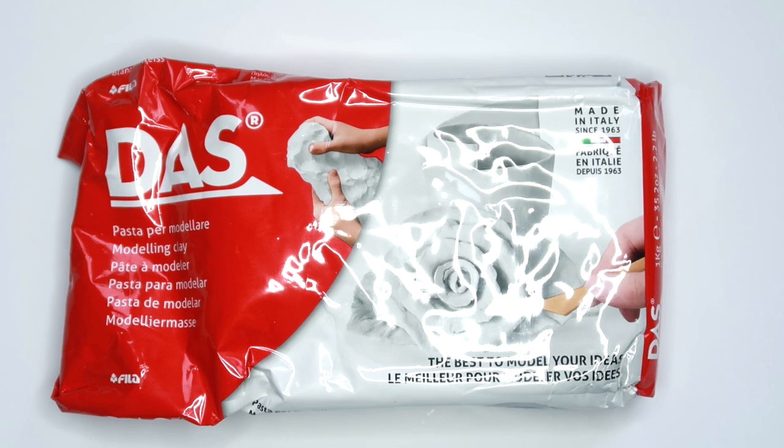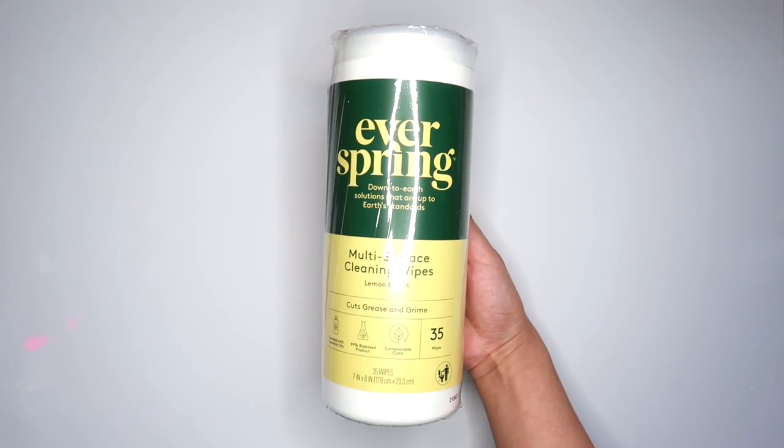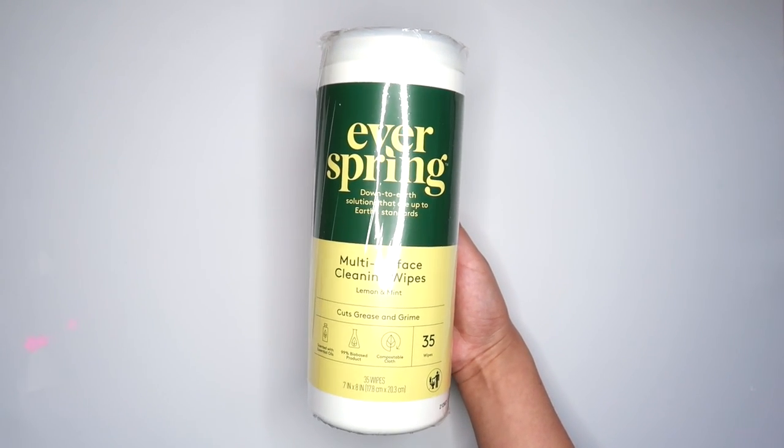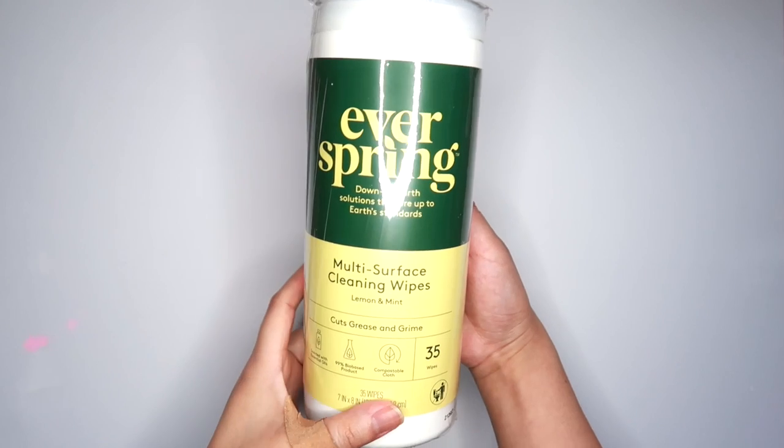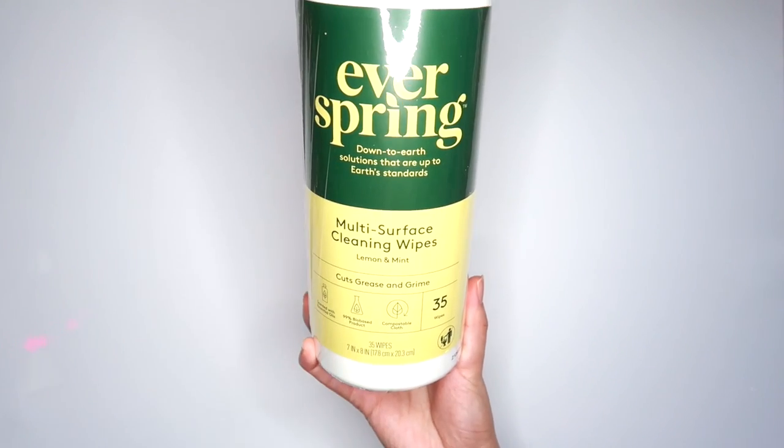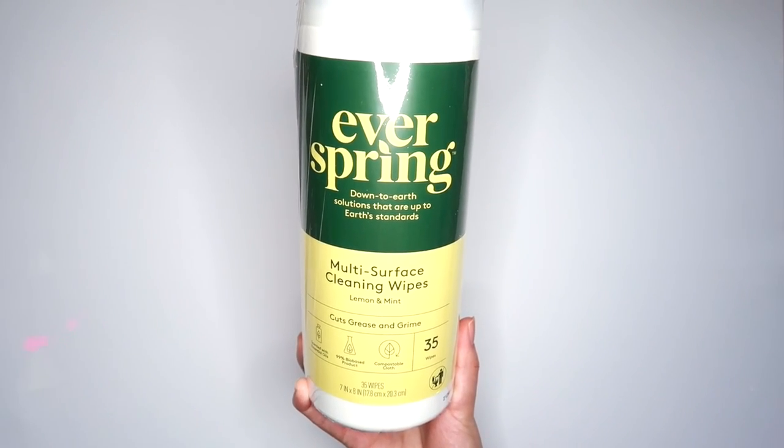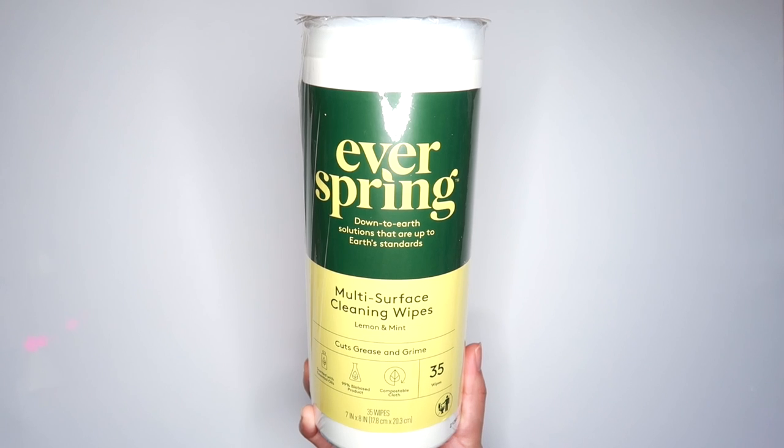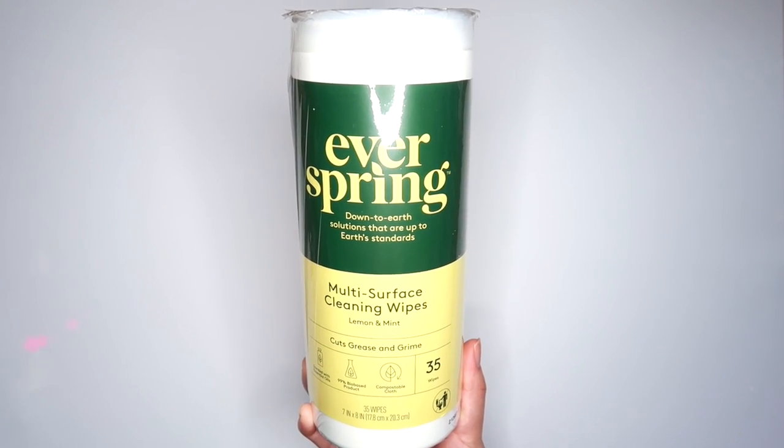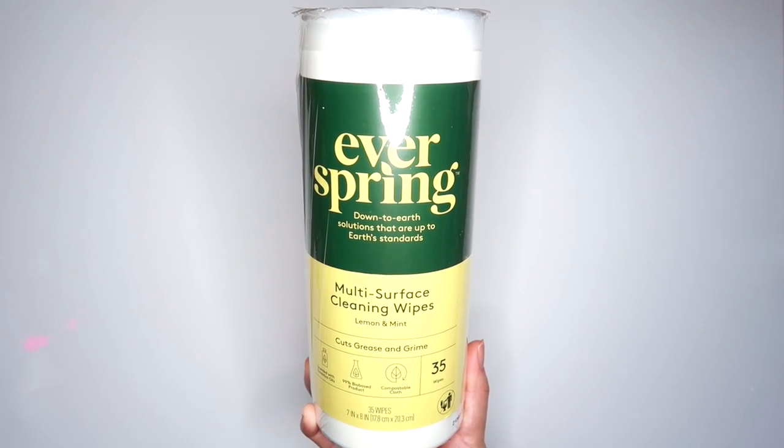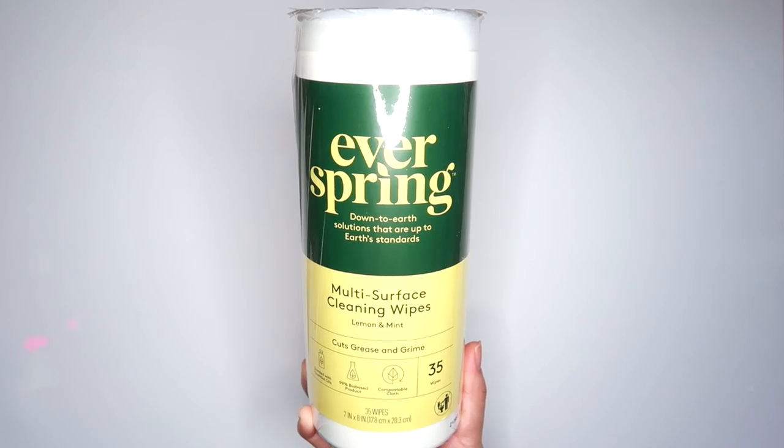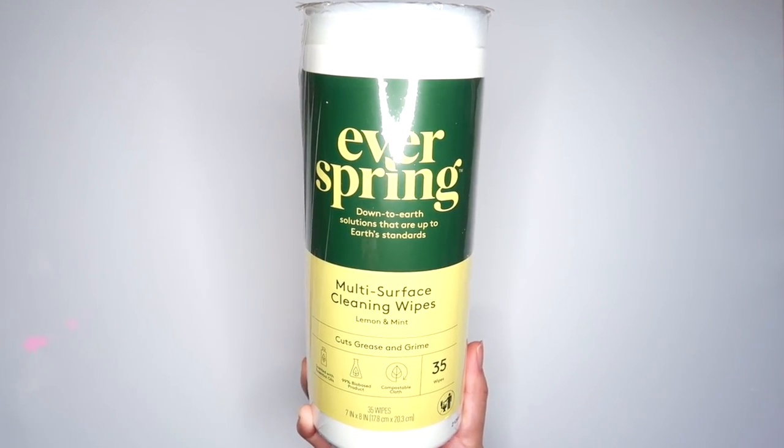Okay guys, so for our first air dry clay project, we're going to start out with a vase and I'm going to be using Dazz air dry clay for this. You're also going to want to grab something that can be in the shape of a vase. So I'm going to be using this cleaning wipes container, but you can also use like a tall water bottle or like an actual vase. And this is going to give us our vase shape. Also, I made sure to wrap this in plastic wrap so that my clay doesn't stick to it when it dries.